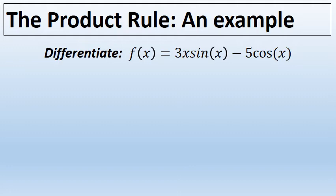This function has two terms. The first term is 3x times the sine of x, and the second term is negative 5 cosine of x. The first term has two factors, 3x and sine of x, and to take the derivative of those two factors we're going to need to use the product rule.